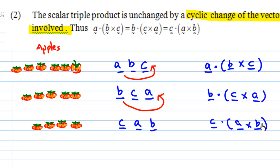CAB means C dot A cross B. This second property say that A dot B cross C is the same as B dot C cross A is the same as C dot A cross B. This is what we mean by scalar triple product is unchanged by a cyclic change of vectors involved.